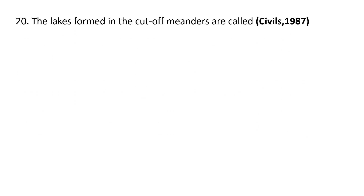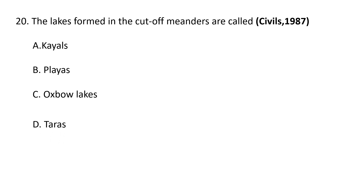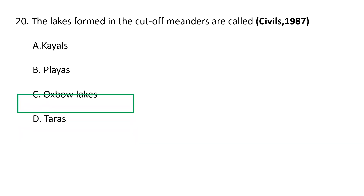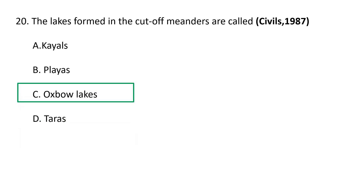Next question: The lakes formed in cutoff meanders are called — A) kayles, B) playas, C) oxbow lakes, D) tarns. Kayles are shallow sea inlets or lagoons. Playas are depressions in desert areas or desert basins. The correct answer is C, oxbow lakes.